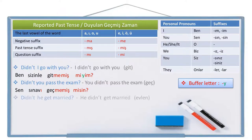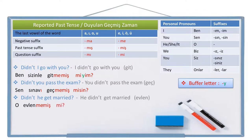Didn't he get married? This is the negative question sentence and the negative sentence is: he didn't get married. He is 'o', get married is 'evlen', not get married is 'evlenme' — that's the negative suffix — didn't get married is 'evlenmemiş' — that's the past tense suffix. Now we leave a space and write the question suffix 'mi'. There is no person pronoun suffix for 'o'. O evlenmemiş mi? Didn't he get married?